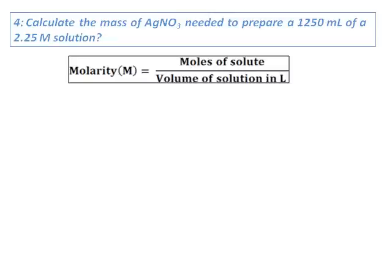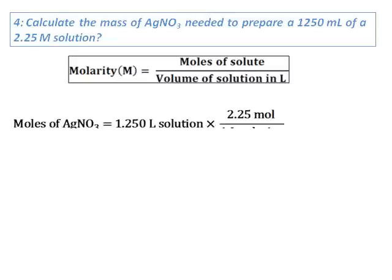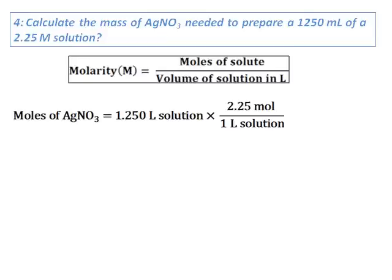Let's first try to get the moles of silver nitrate. Moles of silver nitrate will be, express the volume 1250 in liters. If I multiply it by the molarity, I will get the moles of silver nitrate, which is equal to 2.81. The molar mass of silver nitrate is 168.87.